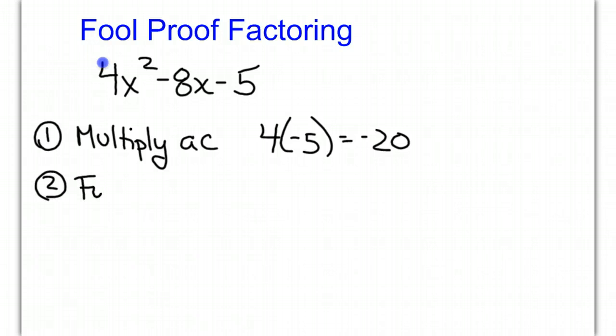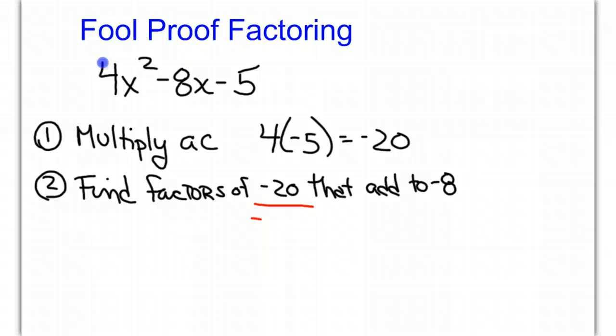Then we need to find factors of negative 20 that add to our B term. We want factors of negative 20 that add to negative 8. The two factors of negative 20 that add to negative 8 are negative 10 and positive 2.